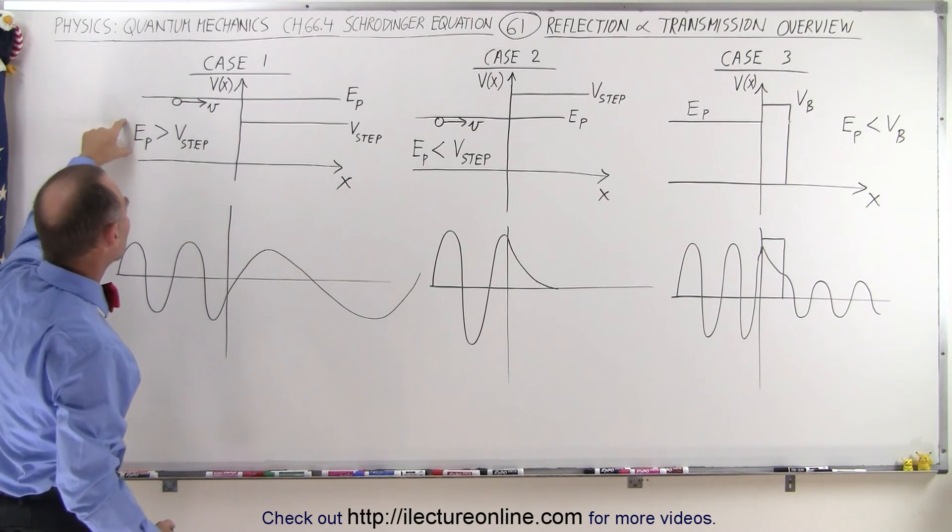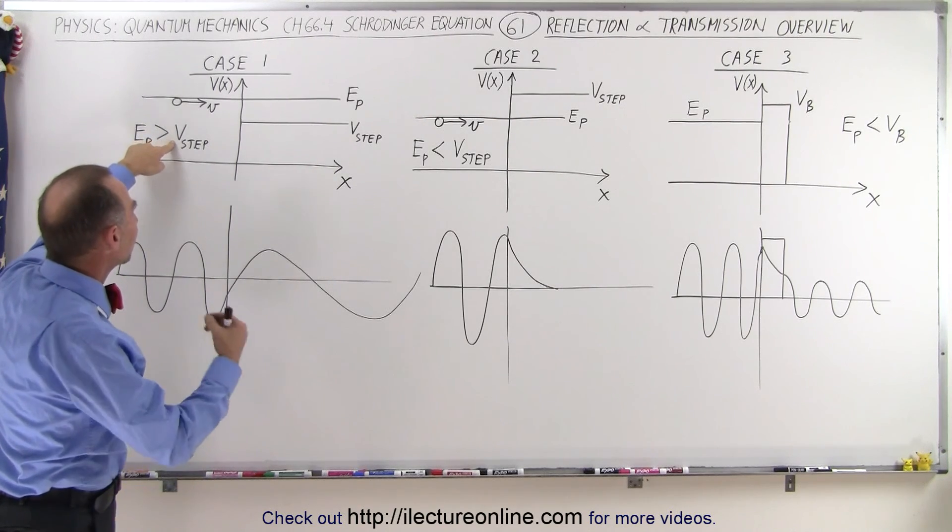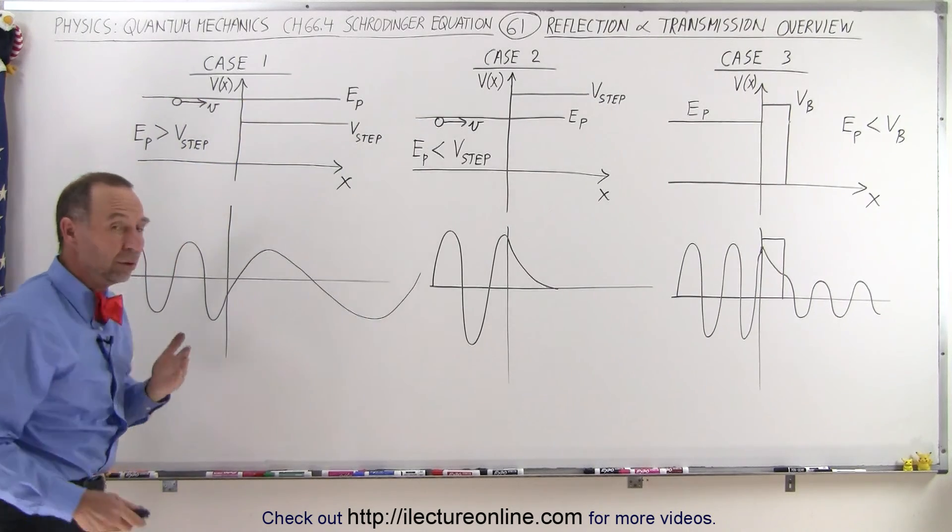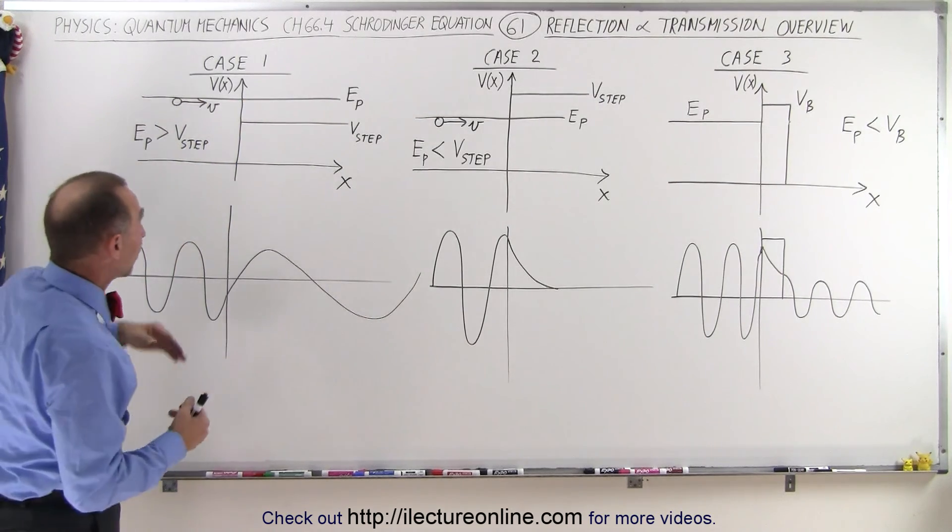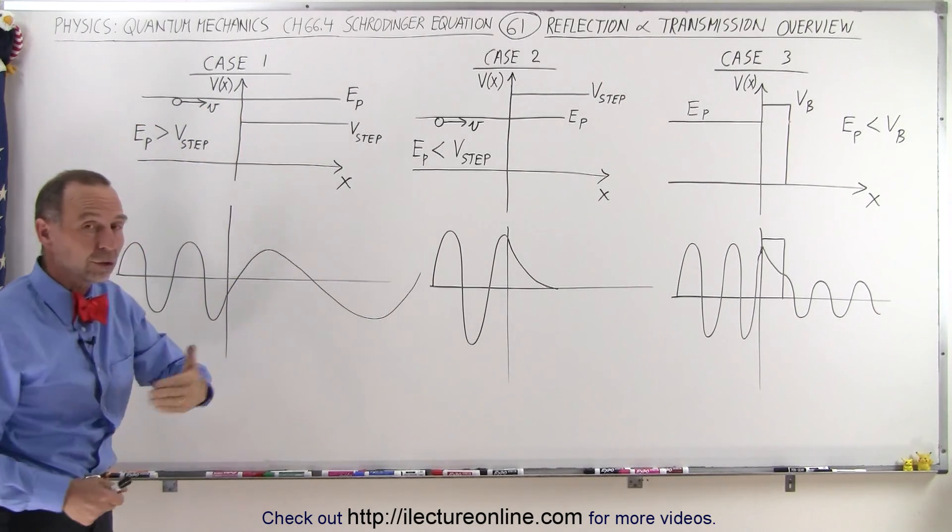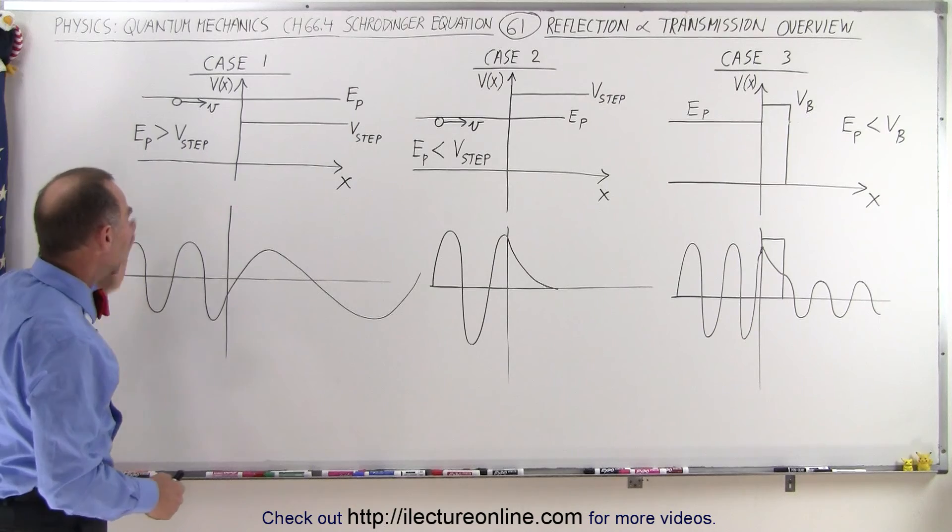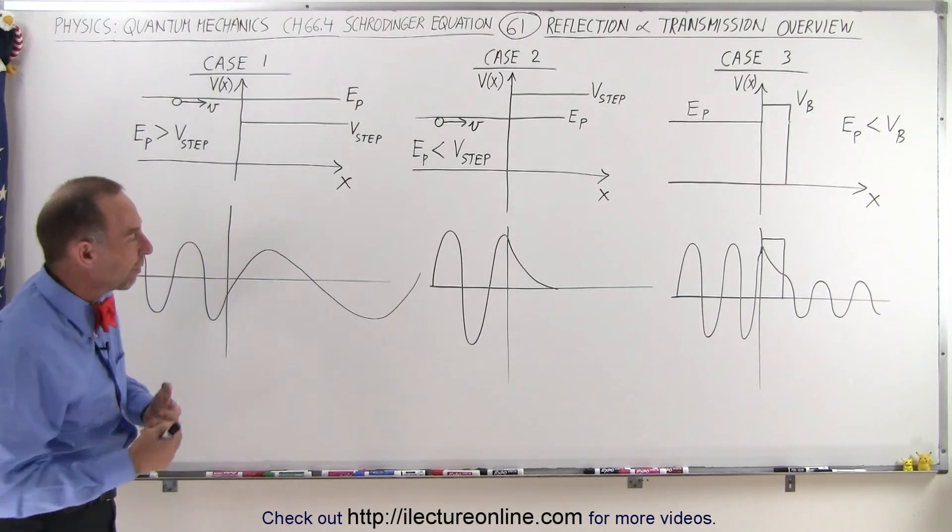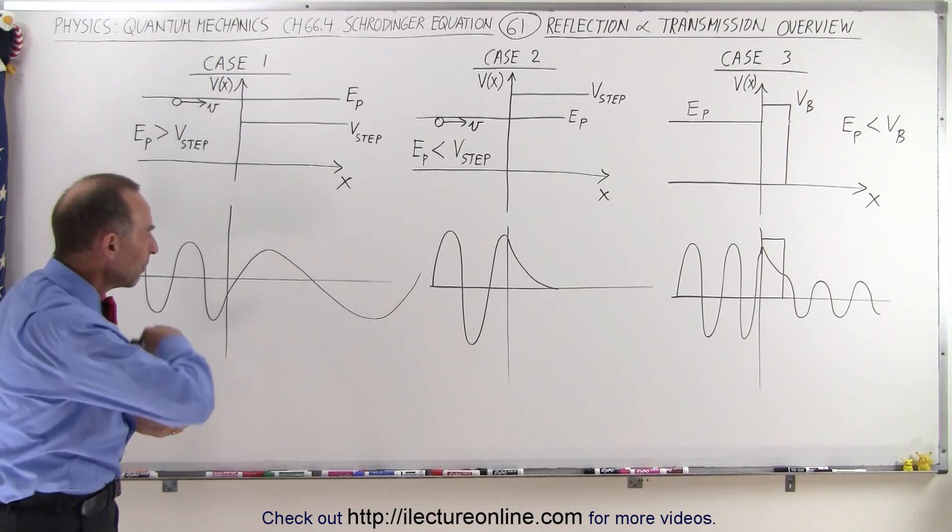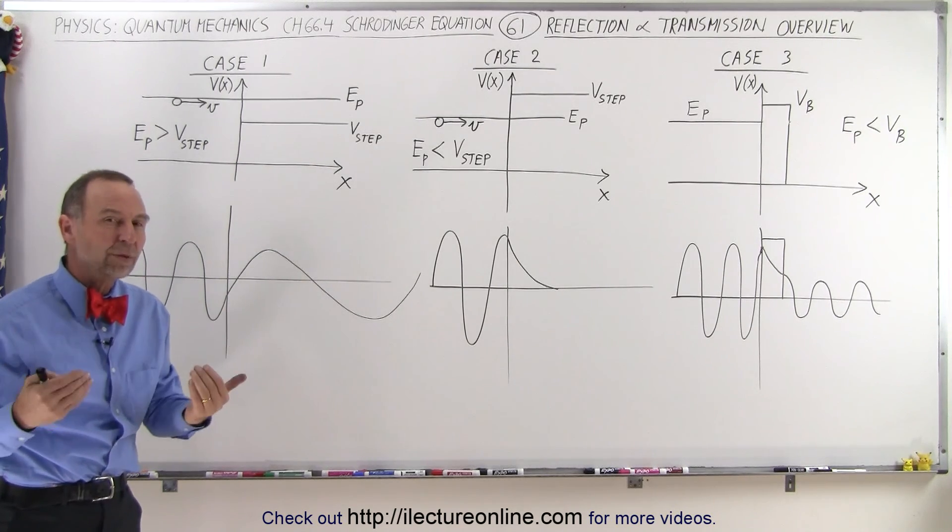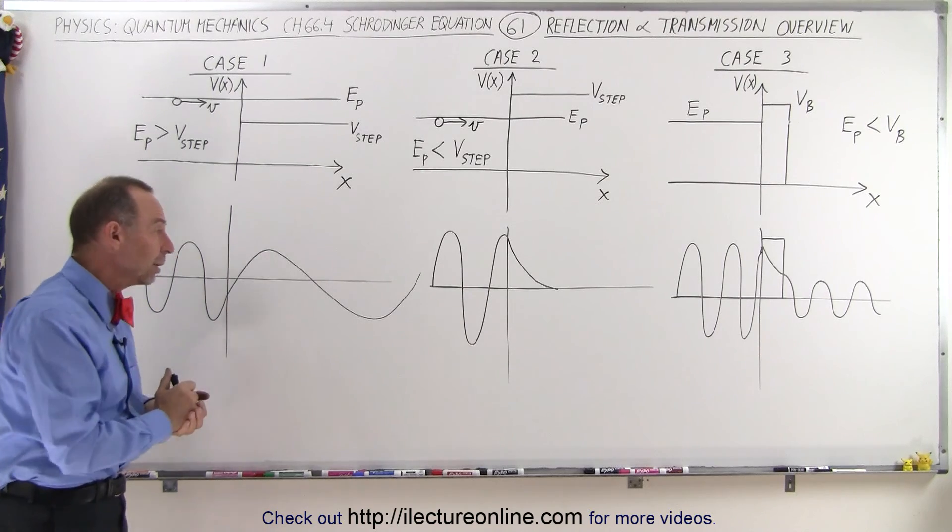One case where the energy of the particle is greater than the potential of the step, it will continue on, but it may even get reflected. It turns out there's a possibility of reflection, there's a possibility of transmission, but if the particle does get transmitted, it will end up with a longer wavelength because it has lost some of its energy by converting it to a longer wavelength. In essence, the velocity will be slower, resulting in a longer wavelength.